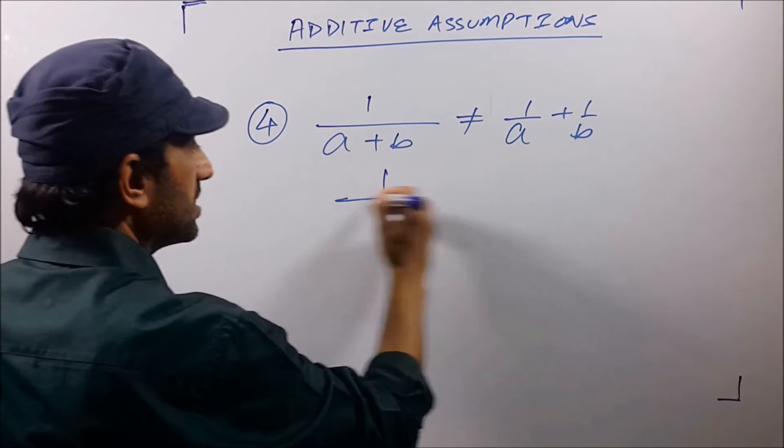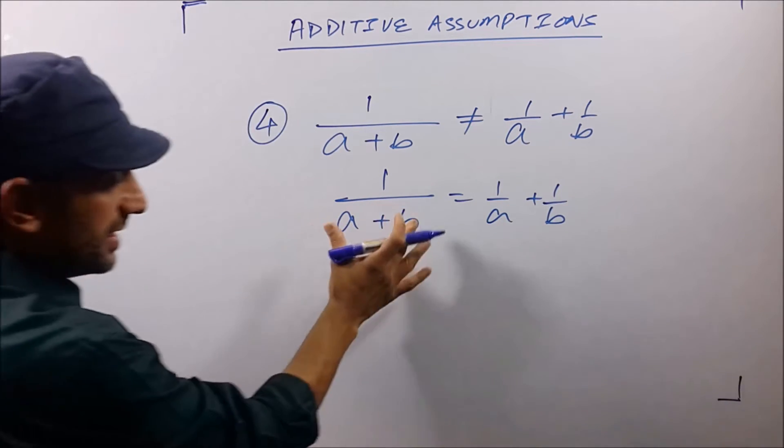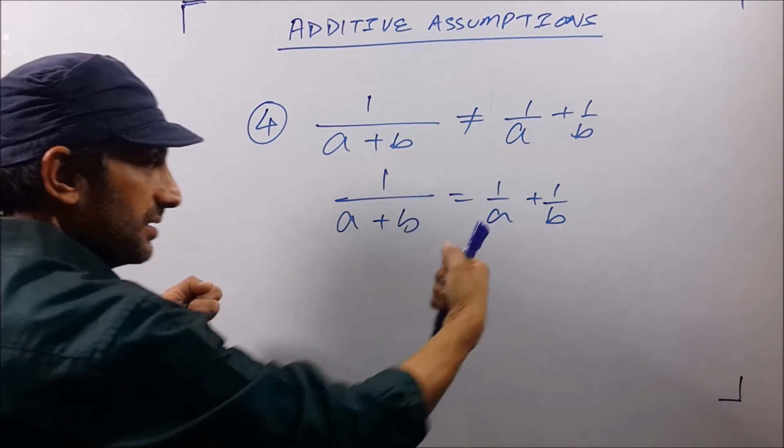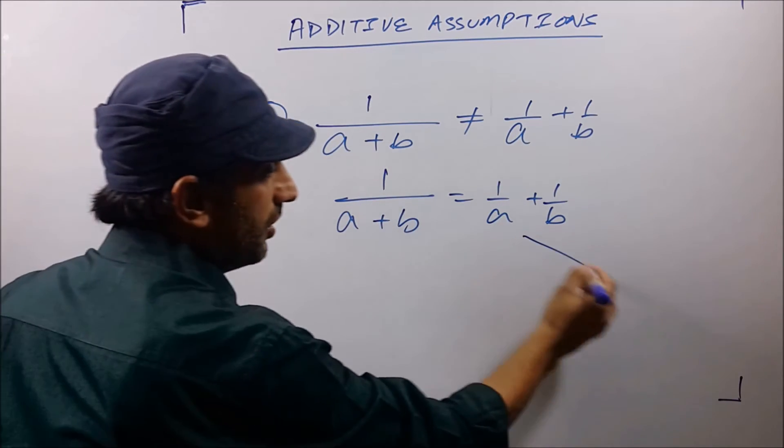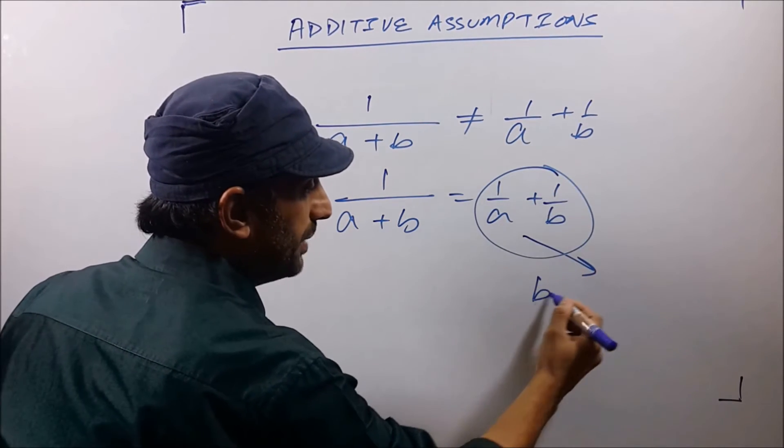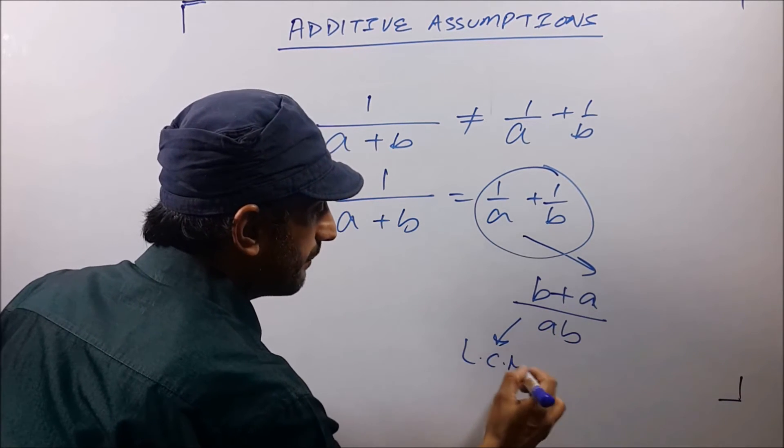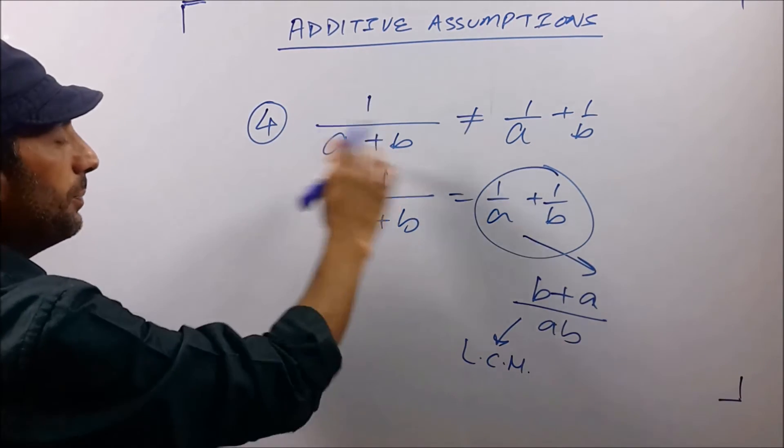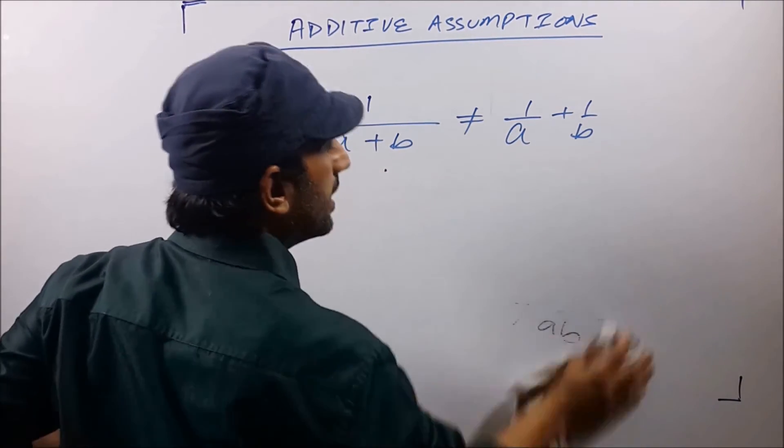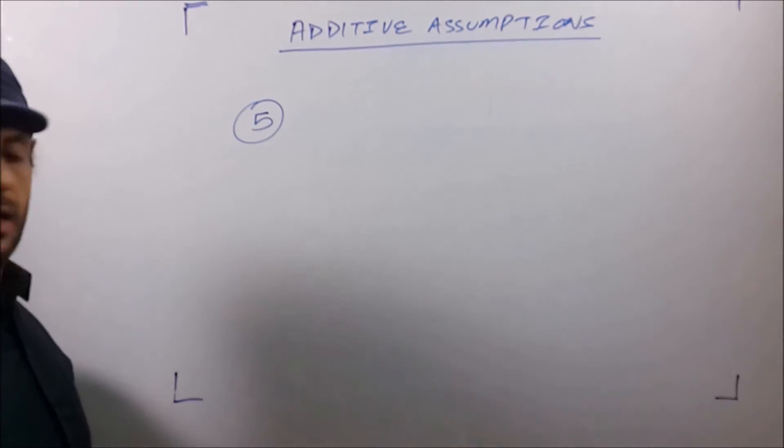But many write 1/(a+b) as 1/a + 1/b. They assume that this is in the numerator, so they separate. And on the right hand side, this thing is equal to (b+a)/ab. It's because of LCM. So 1/(a+b) is not equal to 1/a + 1/b.